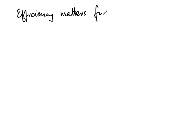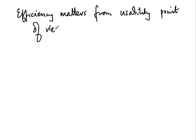Hopefully these two examples convince you that efficiency matters from the point of view of usability. It is important to have a more efficient algorithm because no hardware scale-up can compensate for the huge order-of-magnitude differences between what an n log n algorithm can do and what an n² algorithm can do. There is also another important reason to seek efficient algorithms: developing one often gives a better insight into the structure of the problem itself.